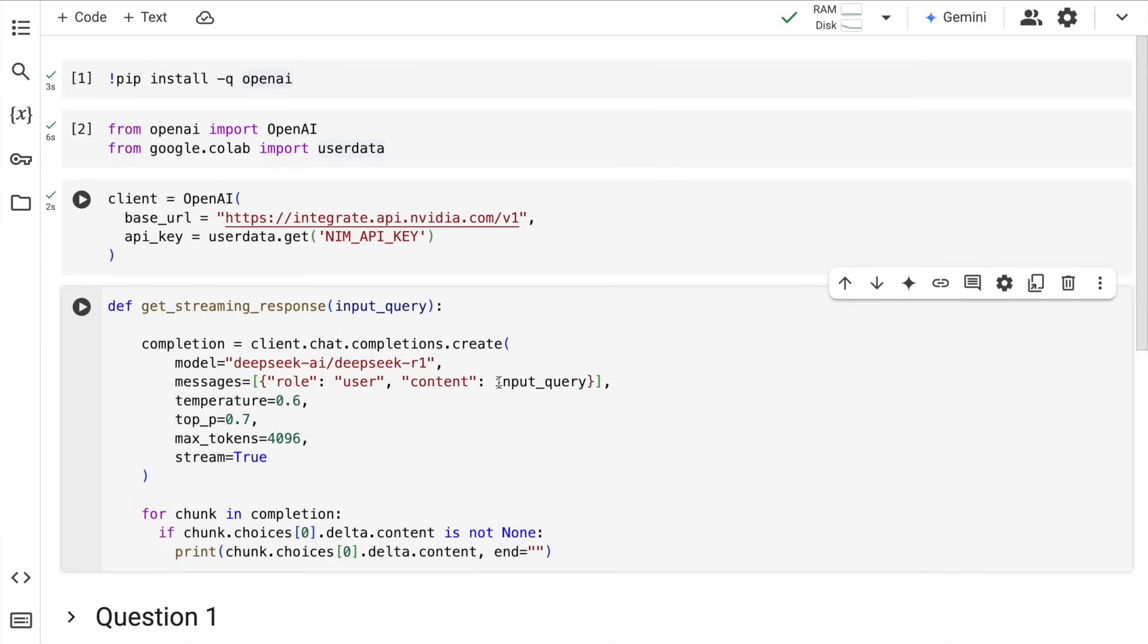The next thing that I do is I create a function called get_streaming_response which accepts an input query. Then using the client.chatCompletion.create function, I pass in the model, the message, temperature, top_p, max_tokens, etc., and I set stream equal to true. For every chunk that I receive in the completion variable, I go ahead and print out the output that is generated.